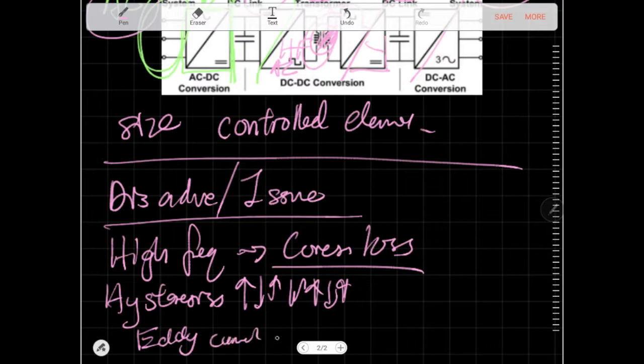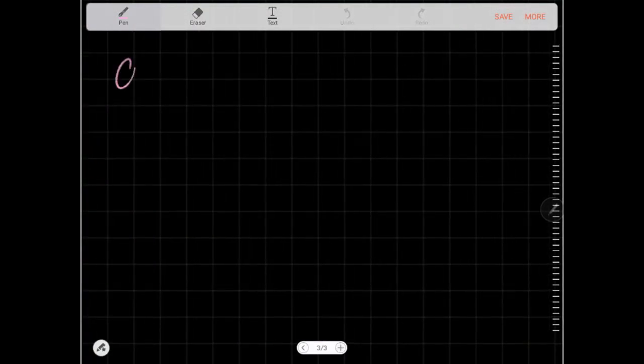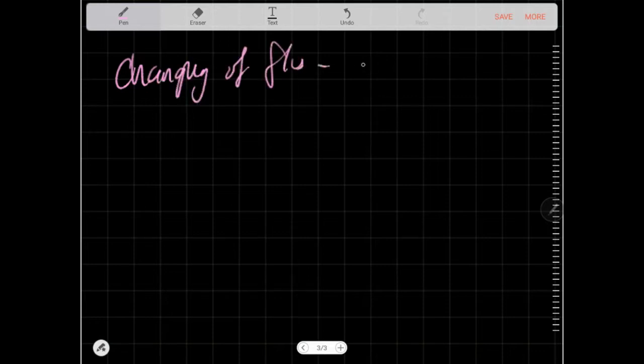Eddy current also exists in high-frequency. It's just current that's just like, hey, I'm gonna escape now. And there's like nothing you can do about it. So the current is produced when the induced voltage and the magnetic flux is changing. So changing of flux. That's one thing. Next page. Changing of flux causes eddy current losses.